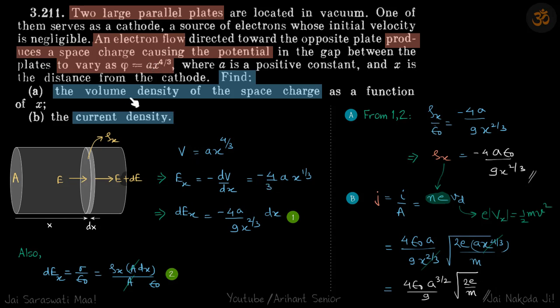So once again I will quickly revise how we did this problem. So volume density, we saw that the potential has a function of x. And the electric field is turning to be a variable. It is a function of x. That means there has to be some space charge. So dE change in electric field is because of sigma by epsilon. And sigma we can write in terms of ρx. So we got one term of dE from here.